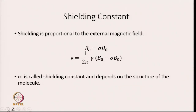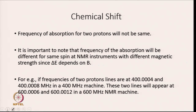Shielding is proportional to the external magnetic field and is not constant — it depends on the external magnetic field. B is given by sigma into B naught, and frequency is 1 by 2 pi times the gyromagnetic ratio multiplied by (B naught minus sigma B naught), where sigma is called the shielding constant and depends on the structure of the molecule. Since sigma is different for different protons in different environments, they resonate at different frequencies, which can be used to get structural information about the molecule.